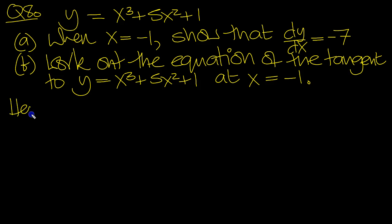Here dy/dx equals differentiate using the power rule. 3 comes down, x to the one less, plus power rule. 2 comes down to be with the 5 to make 10, x to the one less is just power 1, and the constant goes to 0.